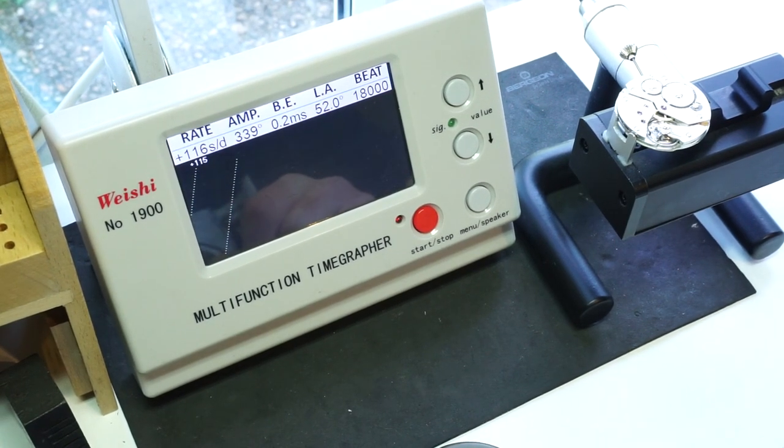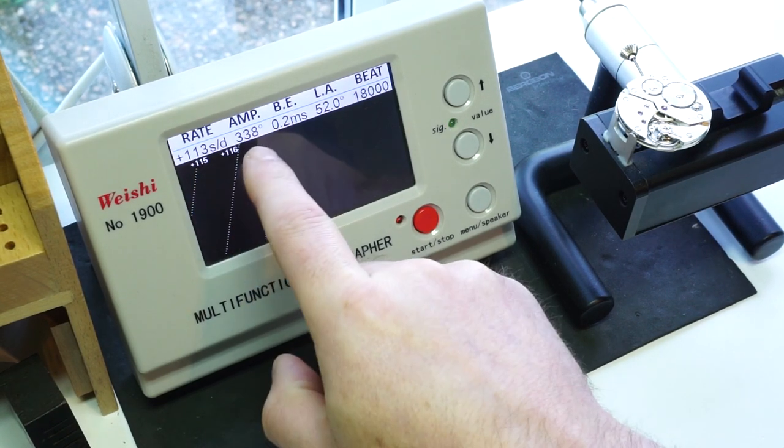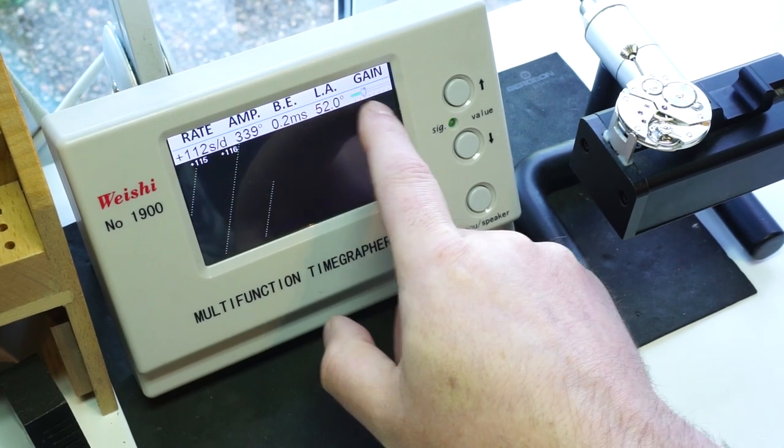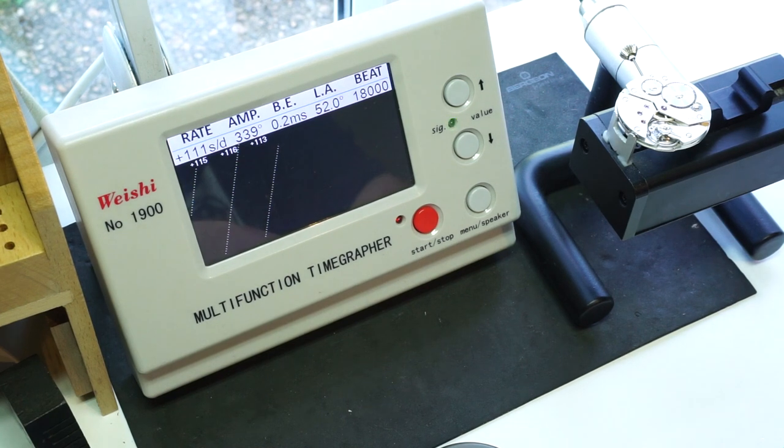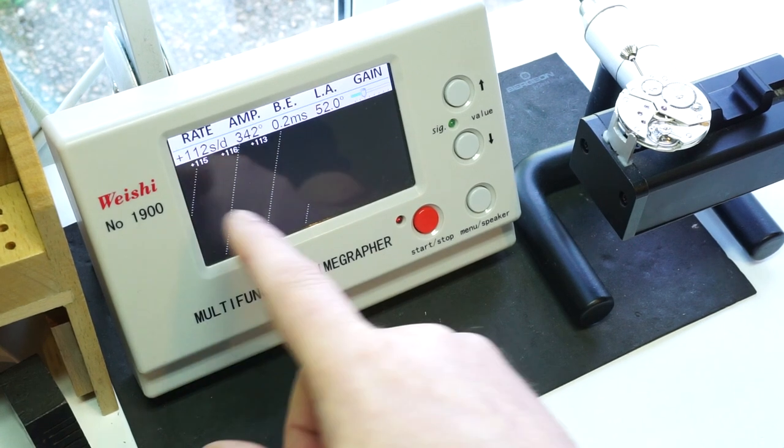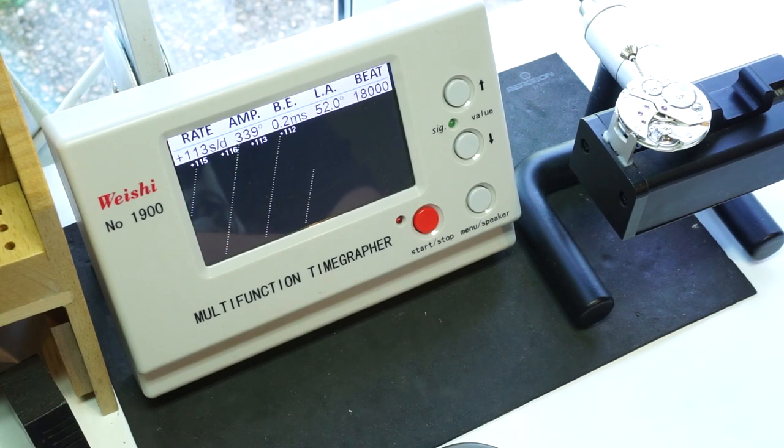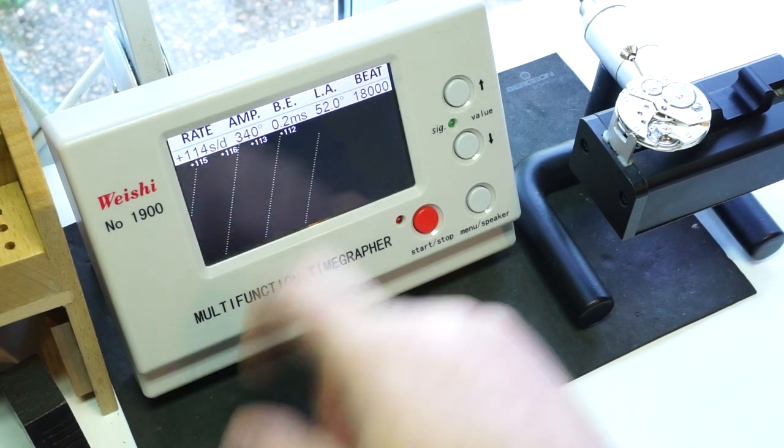Let's zoom in on the screen a little. We can see the rate here - that's how much time it will gain or lose in a 24 hour period. We have the amplitude and the beat error, the lift angle and the frequency of the movement. All of these things I'm going to go over separately in the timegrapher video. The rate here is 112 seconds gain per day. We want to get that down to a more reasonable time period. The amplitude is quite healthy, well over 300 degrees. The beat error is down to 0.2 milliseconds.